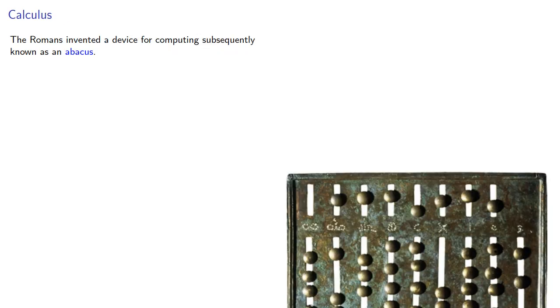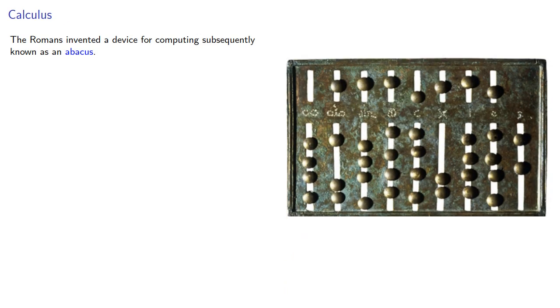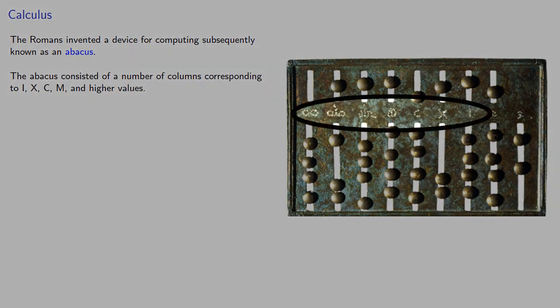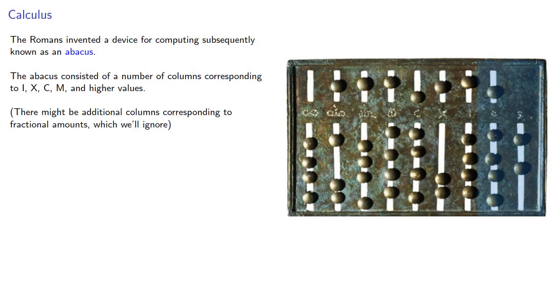The Romans invented a device for computing subsequently known as the abacus. The abacus consisted of a number of columns corresponding to the values 1, 10, 100, 1000, and so on, and there might be some additional columns corresponding to fractional amounts, which we'll ignore.